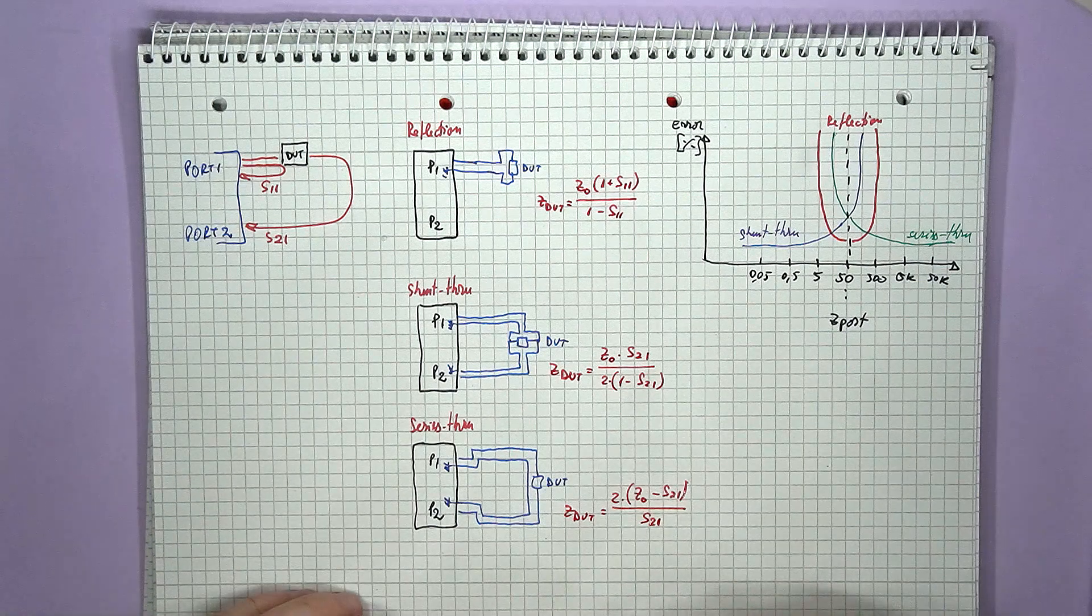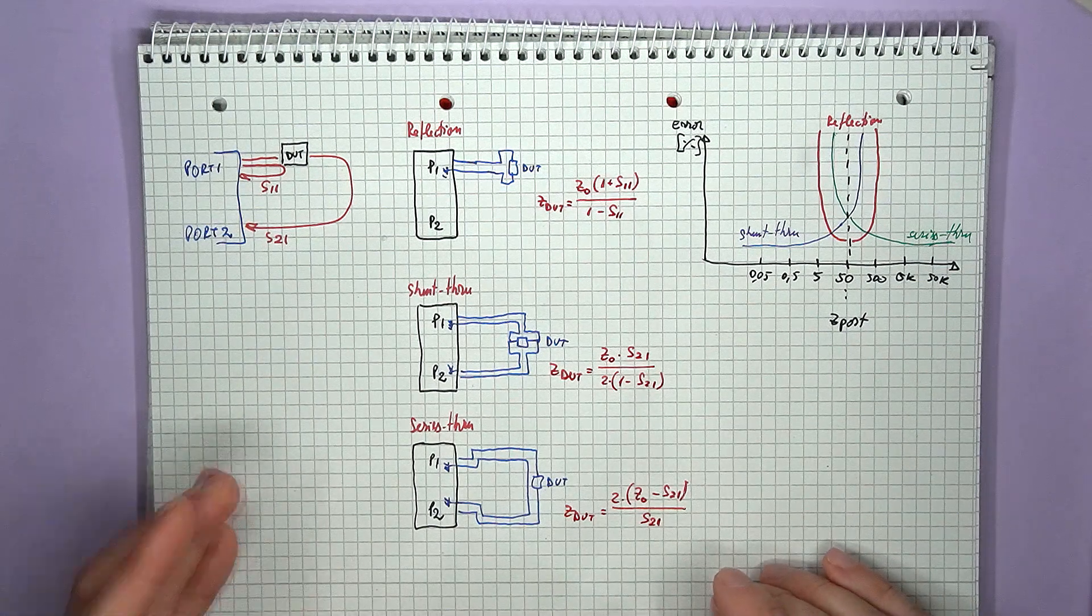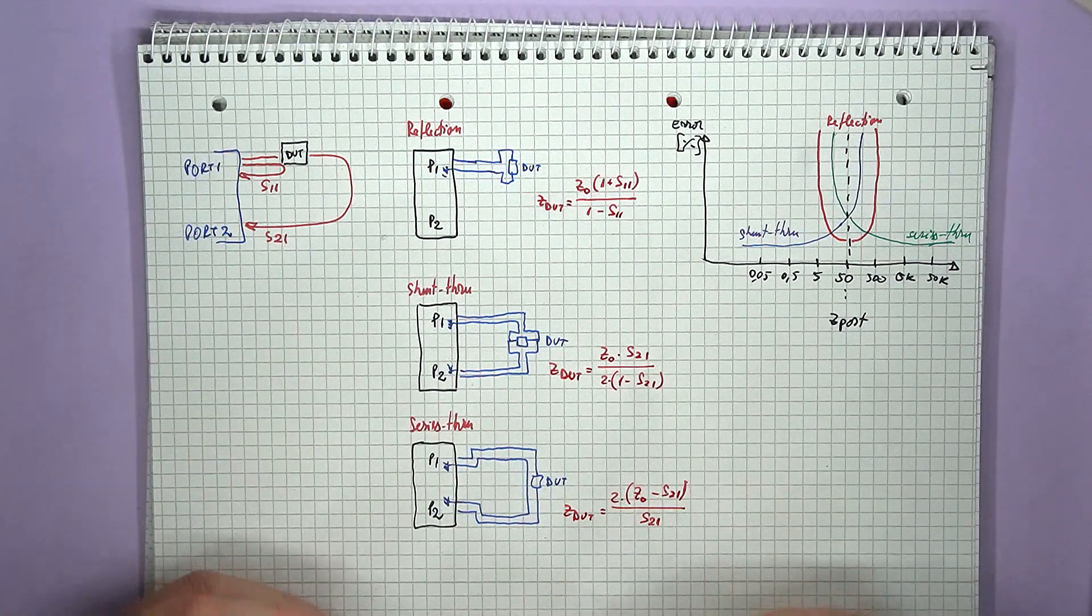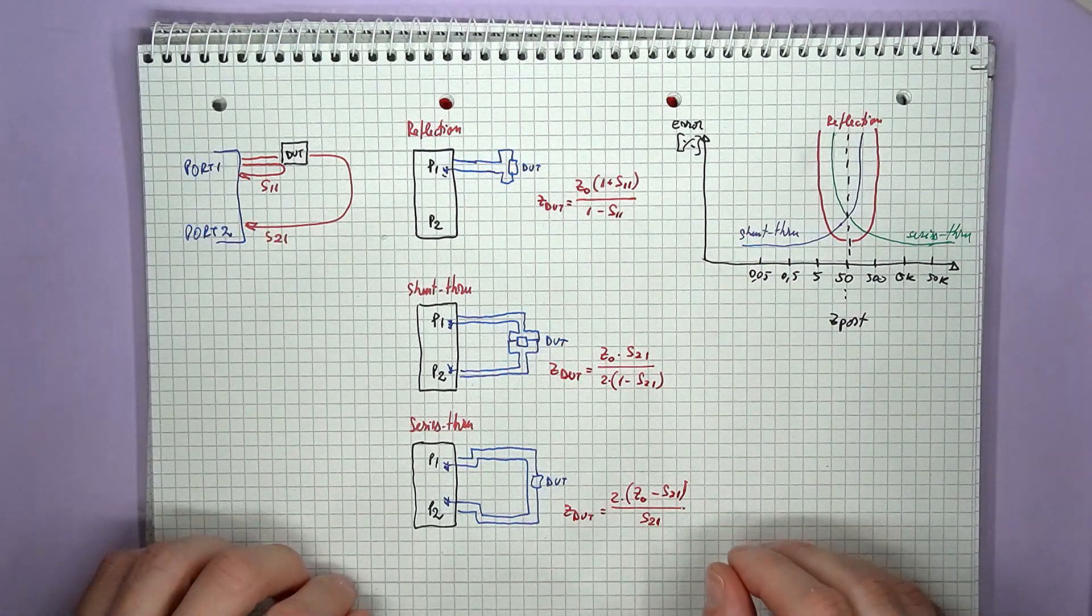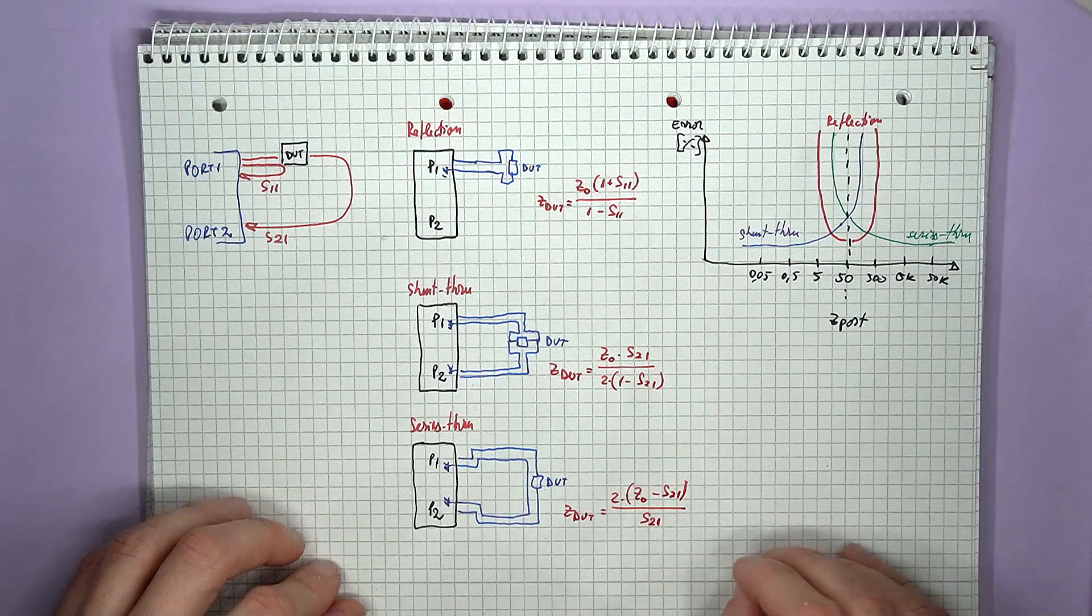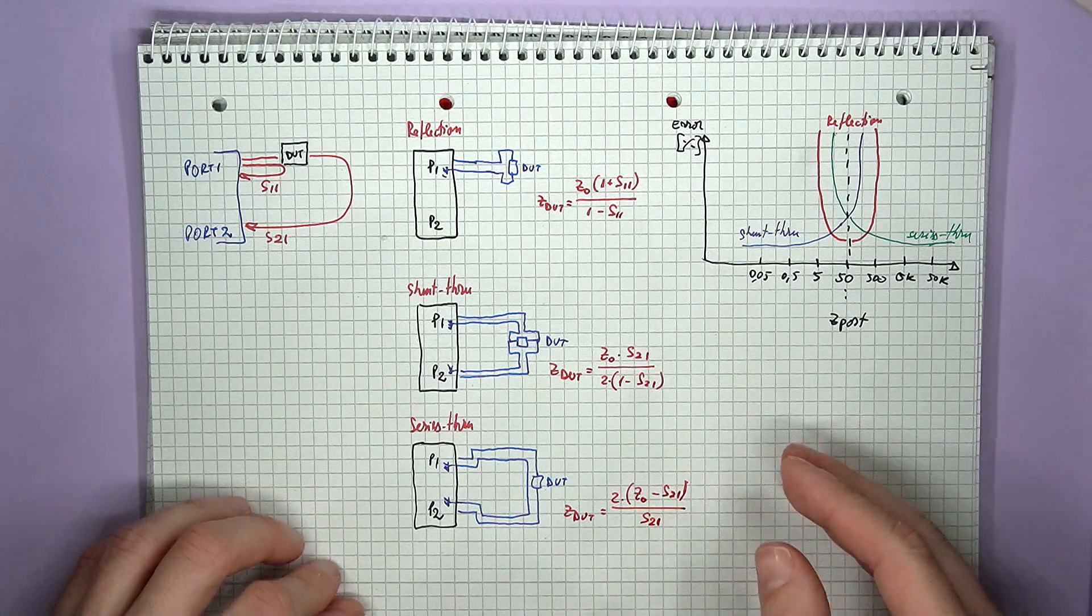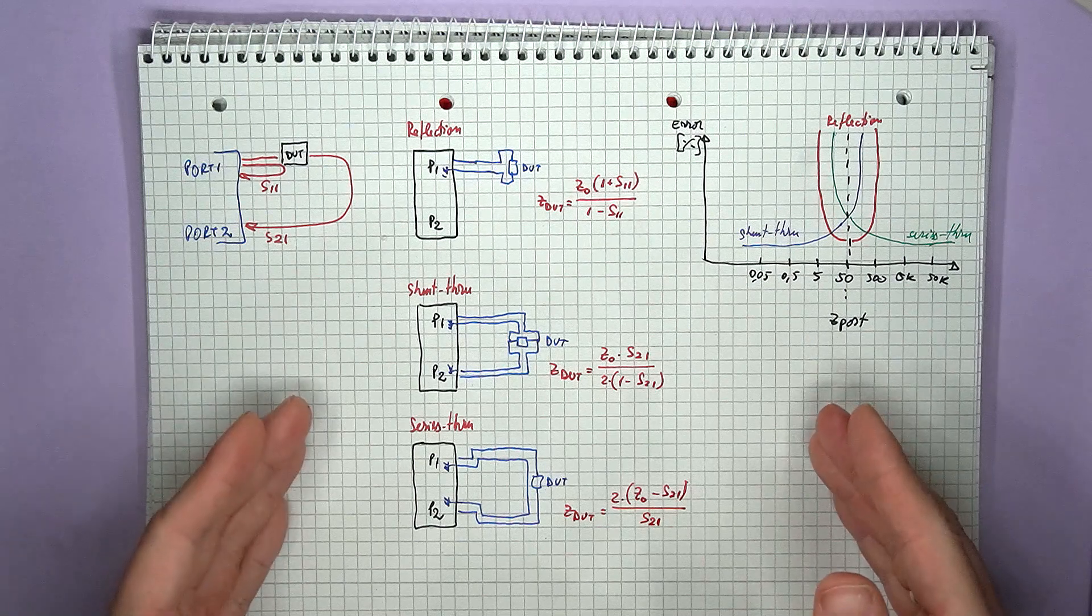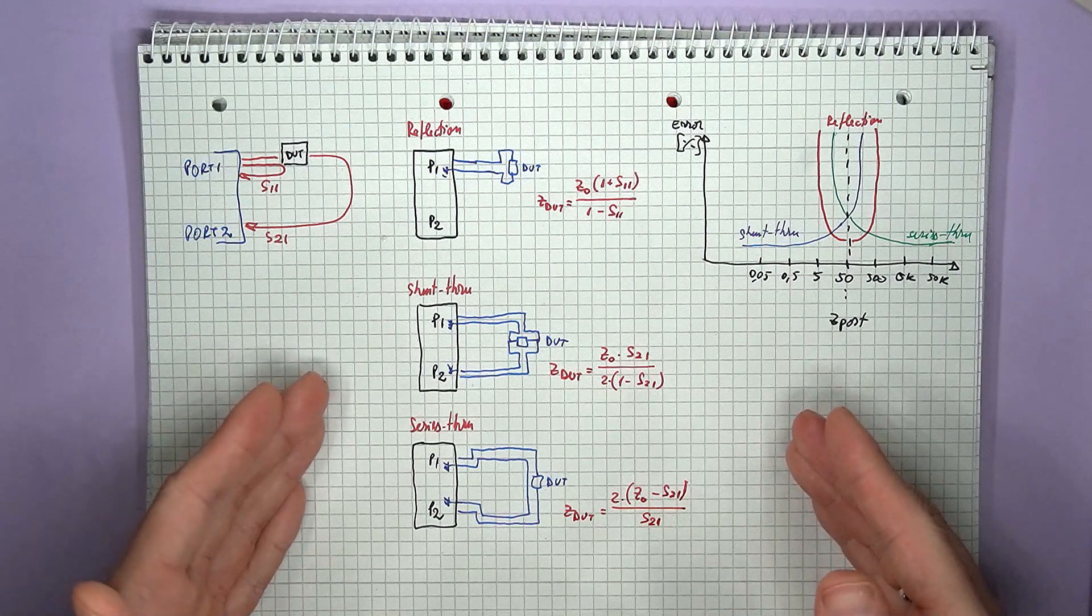Last thing to mention before moving on, is the exact method to convert the S-parameter to an impedance. So for each of the three methods, there is a different calculation that needs to be applied. And the thing to remember here,